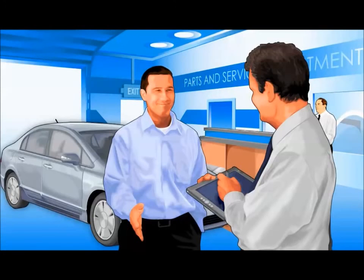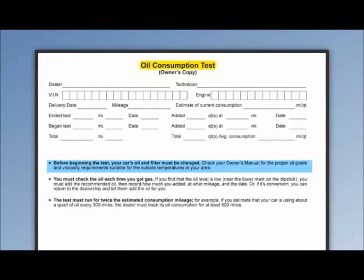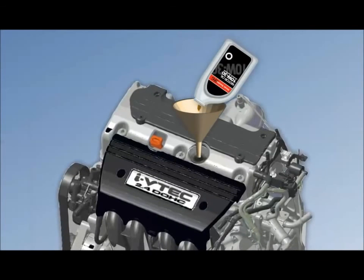When owners complain of excessive oil consumption without any visible leaks, use the job aid designed to track oil consumption. The test begins immediately after an oil service and asks the customer to record the amount of oil consumed during the testing period at each fuel fill. The test should track oil consumption for twice estimated consumption mileage of the vehicle. Keep in mind that the test depends on the customer correctly measuring the oil they have added to the engine.